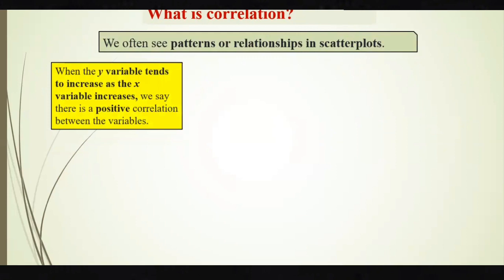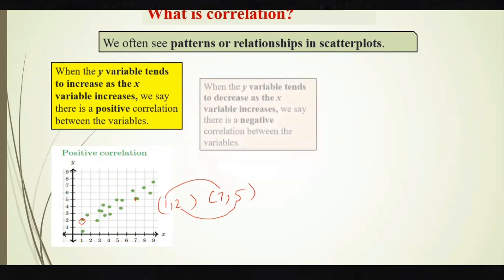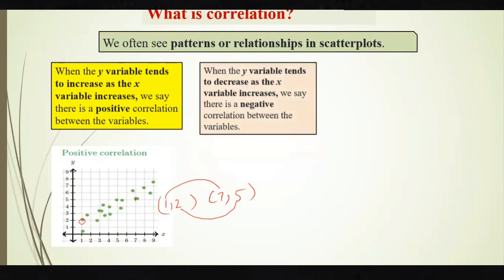We often find patterns or relationships in scatter diagrams. When the y variable tends to increase as the x variable increases, we say there is a positive correlation. You can see that as the x value increases, the y value is also increasing. For example, one point might be at (1, 2) and the next at (7, 5) — as x increases, y also increases. This type of correlation is called positive correlation.